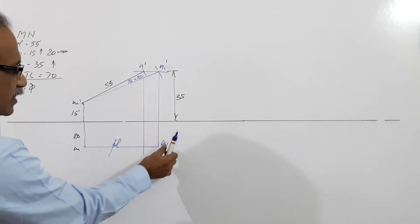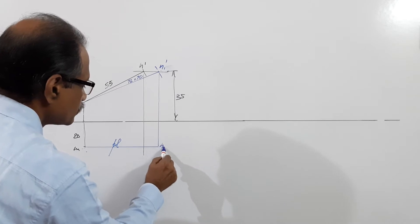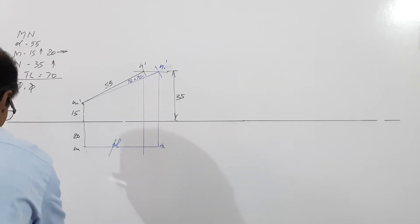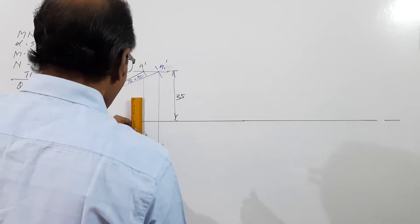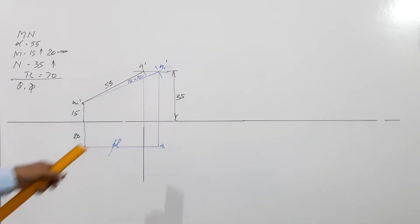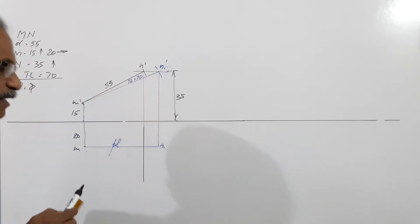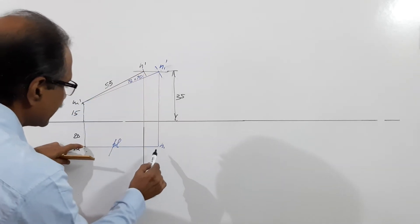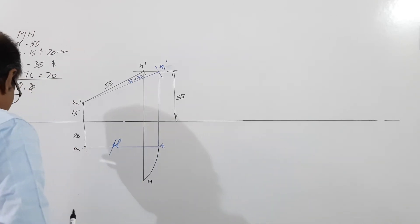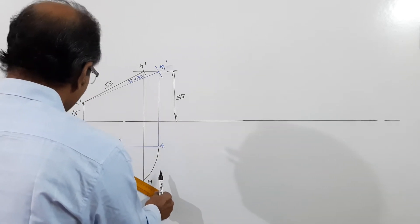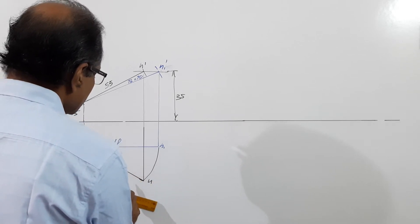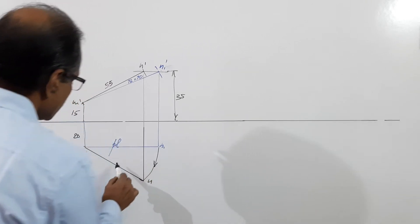If this is N1, N1 to the plan line is equal to the plan. Where is actually the plan of N? The plan of N will lie on this projector. This is N dash, so N will be contained in the same projector. This is the plan line. So where is N? Take the M-to-N1 radius and cut on the projector. This is N. So M-N is the plan of the line.